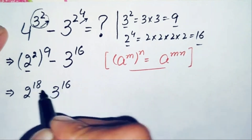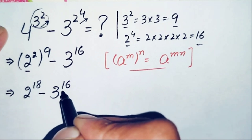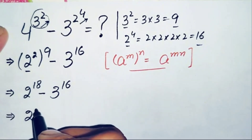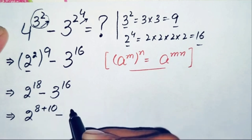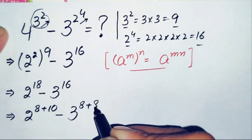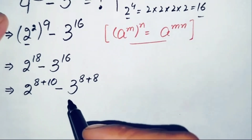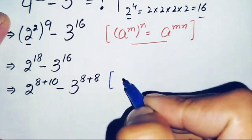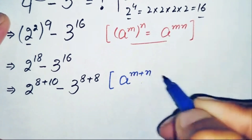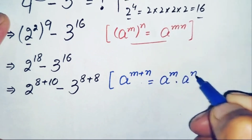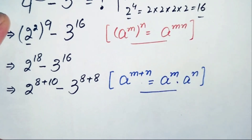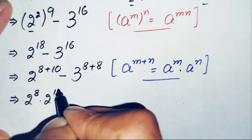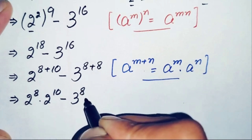Now we split the powers: 18 as the sum of 8 plus 10, and 16 as the sum of 8 plus 8. Using the identity r^(m+n) = r^m × r^n, the equation becomes 2 raised to power 8 times 2 raised to power 10, minus 3 raised to power 8 times 3 raised to power 8.